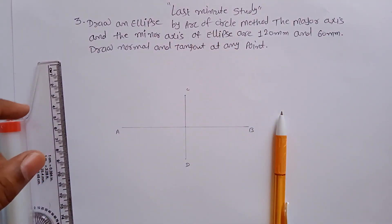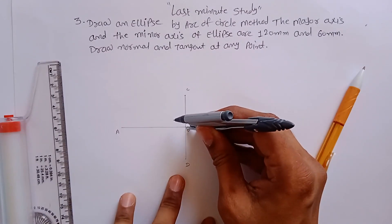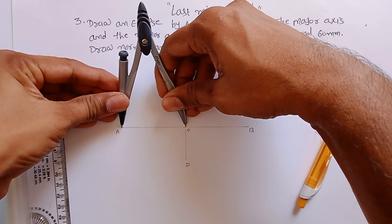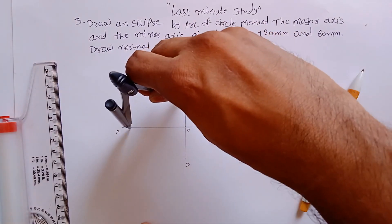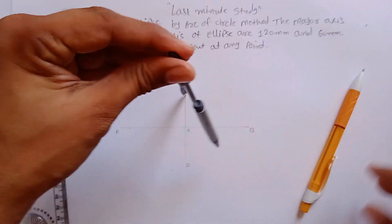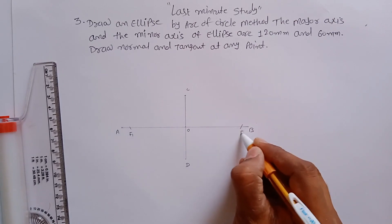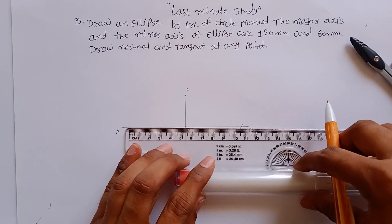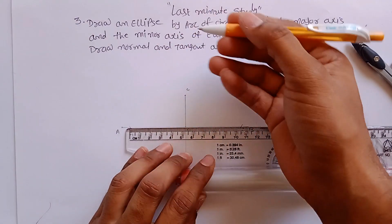Now to construct an ellipse by the arc of circle method, let's say this point is O. You have to find out the focal points. Measure the O-to-A distance and from C make an arc on AB, which is the major axis. Mark this point as F1 and this point as F2.